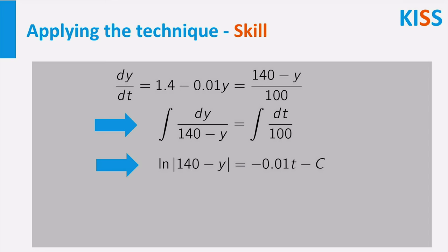Multiply with minus 1, and take exponentials to get rid of the logarithm. The absolute value signs are also annoying, so we get rid of these as well. Finally, rewriting gives an expression for Y, where the constant K replaces the old constant plus or minus E to the power minus C.